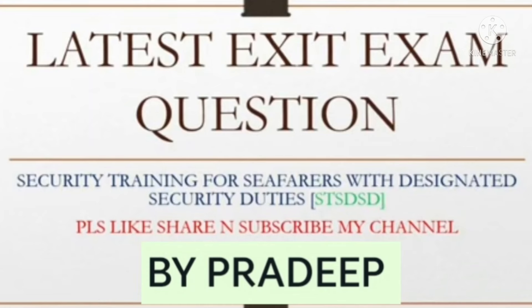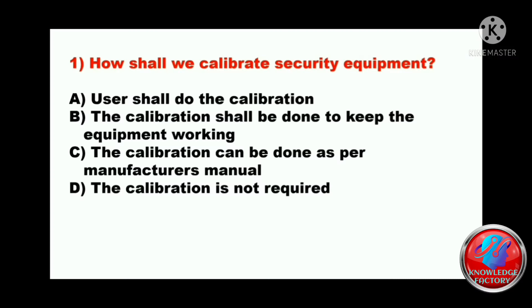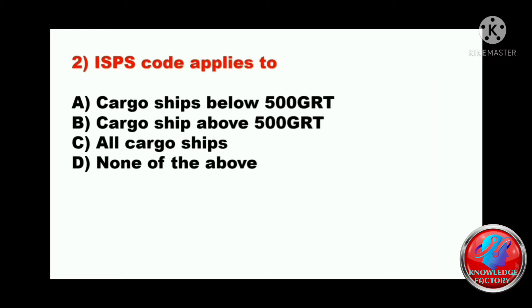Question one: calibration is required, so the answer will be C - the calibration can be done as per the manufacturer's manual. Question two: ISPS code applies to A) cargo ships below 500 GRT, B) cargo ships above 500 GRT, C) all cargo ships, or D) none of the above. The answer will be B - cargo ships above 500 GRT.